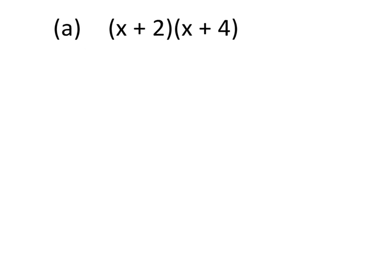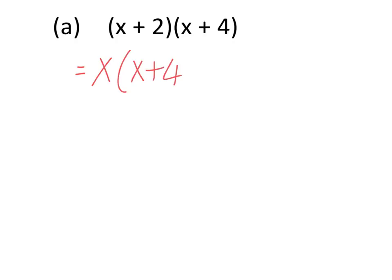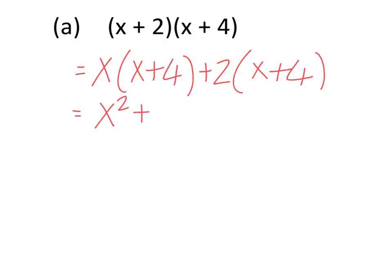Effectively we break the first bracket up. x from the first bracket multiplies the second bracket, and the positive 2 from the first bracket also multiplies the second bracket. So first we have x times x which is x squared, then plus x times 4 which is 4x. Then plus 2 times x is 2x, and positive 2 times positive 4 is positive 8.